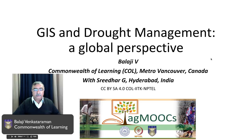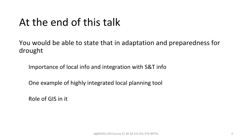My co-author is Dr. Sridhar, who is based in India. At the end of this talk, you would be able to state that in adaptation and preparedness for drought, local information is important and its integration with science and technology-derived information is important. You would also be able to give an example of a highly integrated local planning tool and show the role of GIS in it.